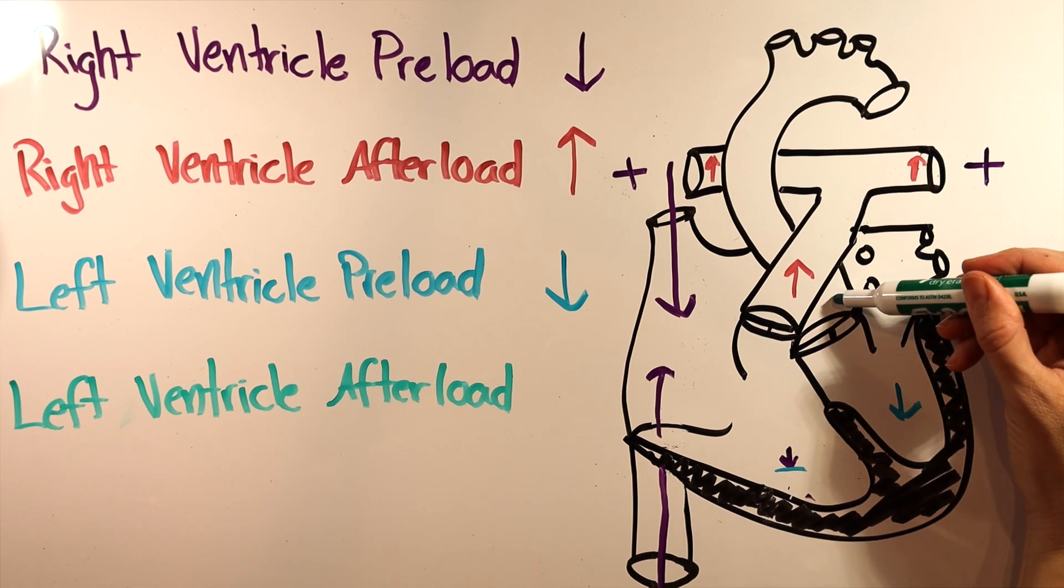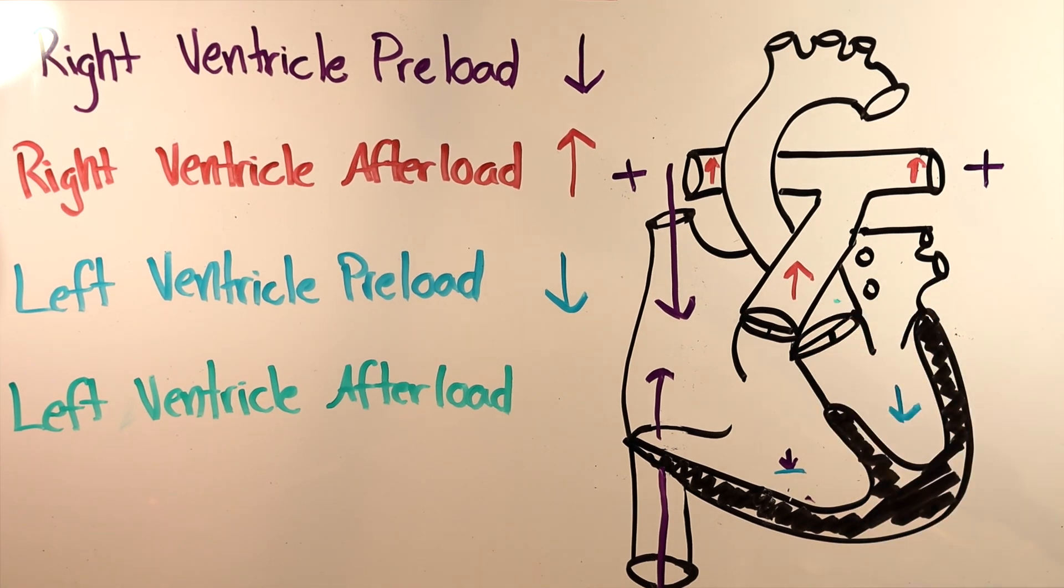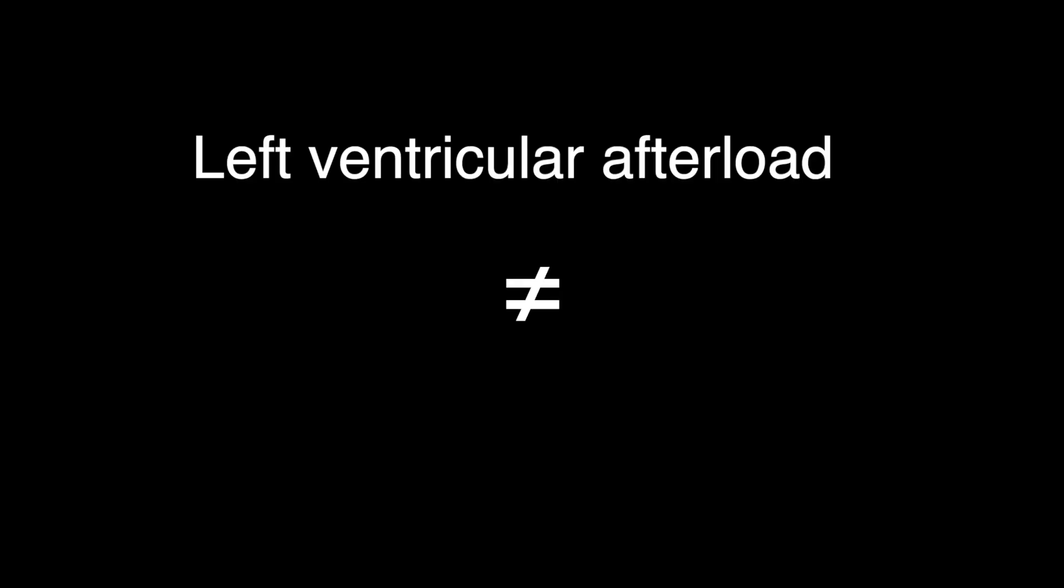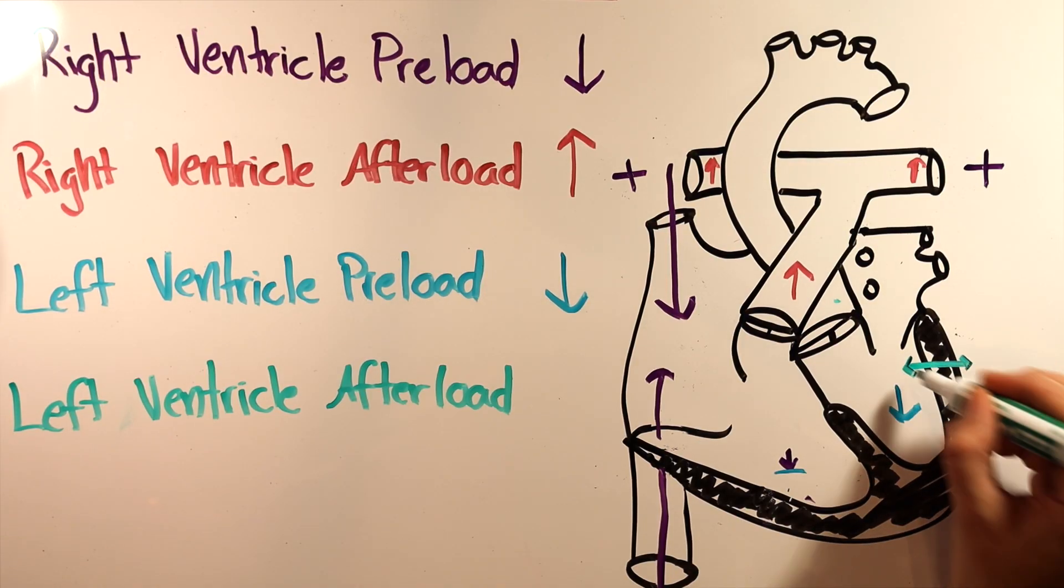How about LV afterload? While the aorta is in the chest, most of the blood vessels that the LV is pumping to are not. So the LV isn't affected by the increased thoracic pressure in the same way the RV is. One thing we need to understand is afterload is not equal to blood pressure, though blood pressure does impact LV afterload. Afterload is the work the LV myocardium has to do to open the aortic valve. That work is dependent on the pressure gradient across the LV-free wall.